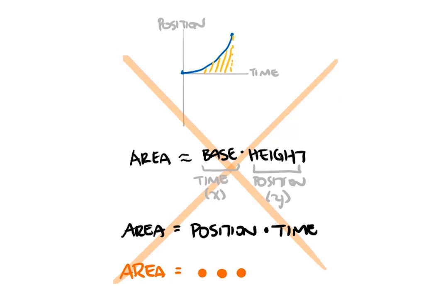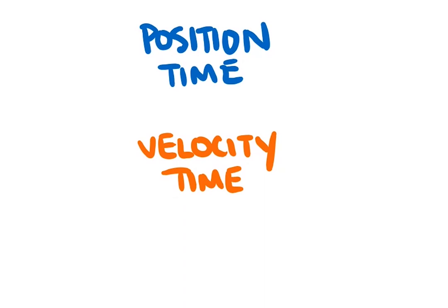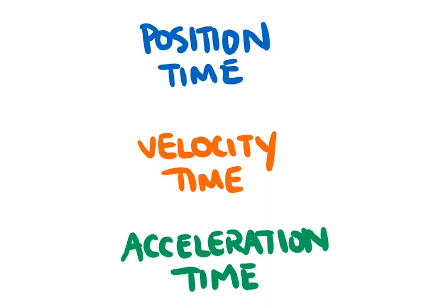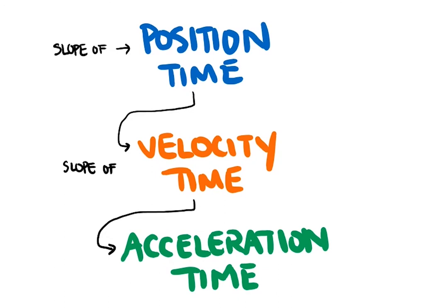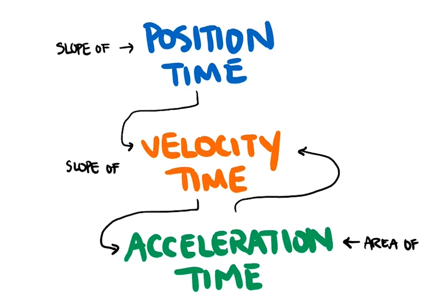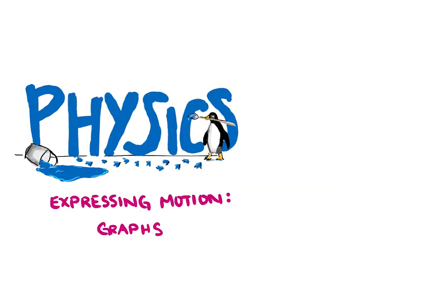We covered how to represent motion graphically through position-time graphs, velocity-time graphs, and acceleration-time graphs. The slope of a position-time graph gives us the values of velocity, and the slope of a velocity-time graph gives us the values of acceleration. Going in the opposite direction, the area underneath the acceleration-time curve gives us the object's total change in velocity, and the area underneath the velocity-time curve gives us the object's overall change in position — also known as displacement. By now you should have a good understanding of what these graphs can show us about an object's motion. See you later on Penguin Physics.